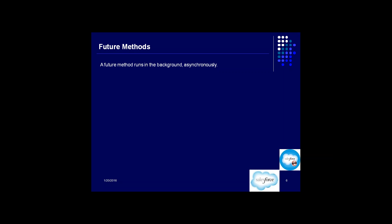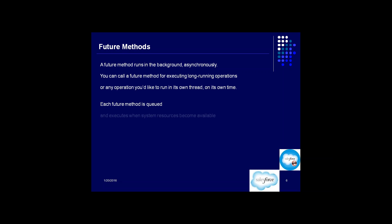You can call a future method for executing long running operations, or any operation you'd like to run in its own thread on its own time. Each future method is queued and executes when system resources become available. In Salesforce, we have an option of looking into the Apex job queue. Future methods and Queueable Apex go and wait in the queue until resources become available so that they can be executed.